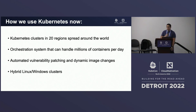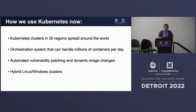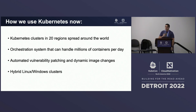We have Kubernetes clusters in 20 regions spread around the world — we have to have them in certain regions for data protection laws. We have an orchestration system that can handle millions of containers per day, automated vulnerability patching, and dynamic image changes. Just on Tuesday we updated OSs running in production during business hours without any customer interruption. We run hybrid Linux and Windows clusters, doing both workloads simultaneously.